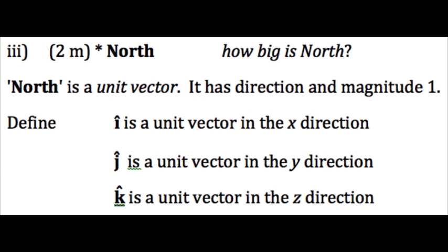So we define i, j, and k as unit vectors. We write them with a circumflex, or hat, to remind us that they're unit vectors.